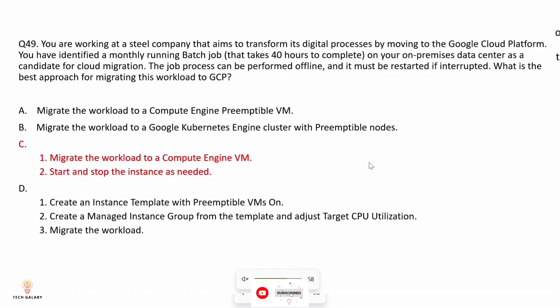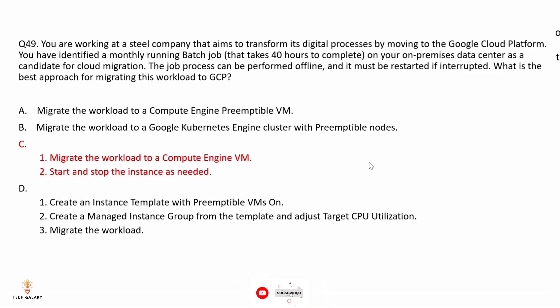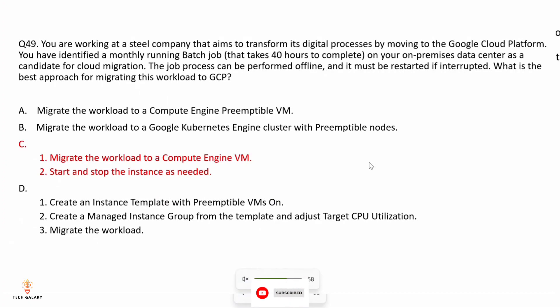Option C: migrate the workload to a Compute Engine VM and start and stop the instances as needed. Migrating the job to Compute Engine is the best approach, and starting and stopping the VMs as needed will save cost. The task runs monthly, can be performed offline, and must be restarted if interrupted — this minimizes cost overall. Option D: use preemptible VMs with a managed instance group — not correct because preemptible VMs are not suitable for long-running tasks.